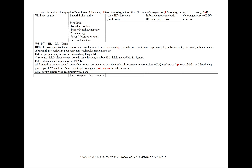In bacterial pharyngitis, we could also see a sore throat. What will help us differentiate bacterial from viral pharyngitis are the Centor criteria, which include tonsillar exudates, tender lymphadenopathy, an absent cough, and a fever. We'll also see a history of sick contacts, and we'll add a rapid strep test and throat culture to our workup.